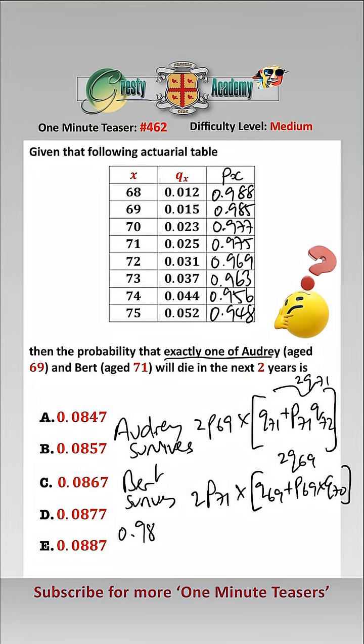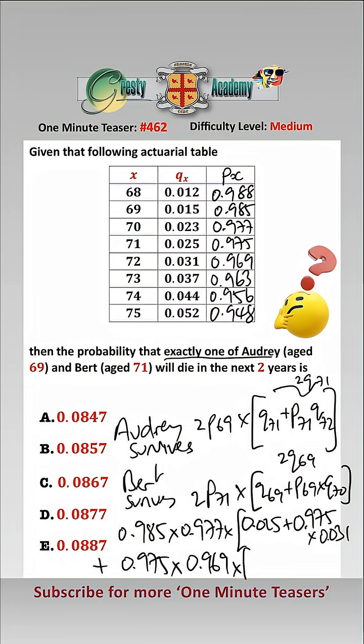We get 0.985 times 0.977 times brackets 0.025 add 0.975 times 0.031 add 0.975 times 0.969 times brackets 0.015 times 0.985 times 0.023. And adding all that lot and putting it in a calculator, we get 0.0887, which is answer E.